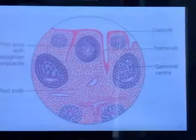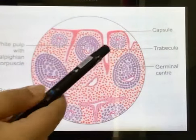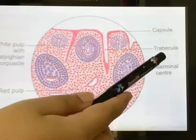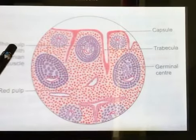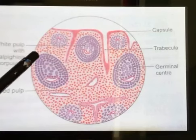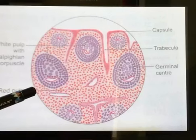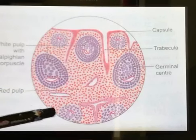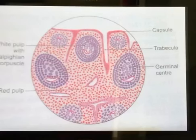Now let's talk about the histology of the spleen. The capsule and trabeculae are formed by fibroelastic tissue. The white pulp consists of lymphatic nodules around an arteriole, called Malpighian corpuscles. The red pulp is formed by a collection of cells in the interstices of the reticulum; these cells include lymphocytes, RBCs, WBCs, platelets, and fixed and free macrophages.